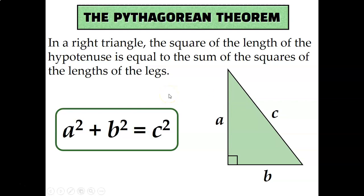a and b are the legs of a right triangle. The legs are the ones that create the right angle. And c is the hypotenuse.